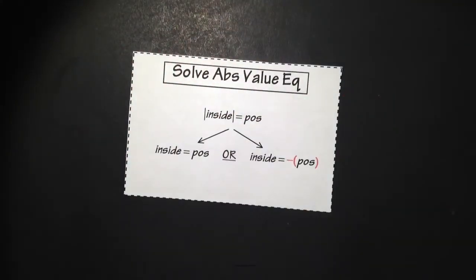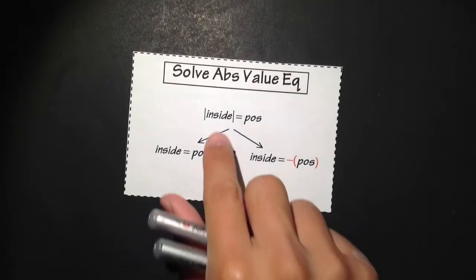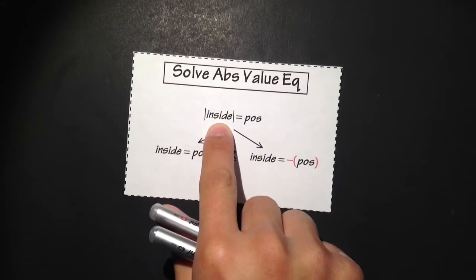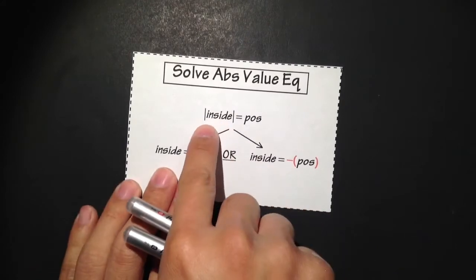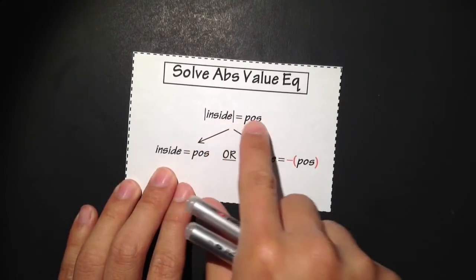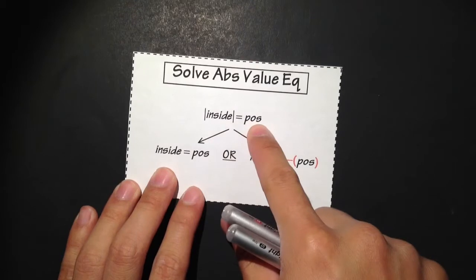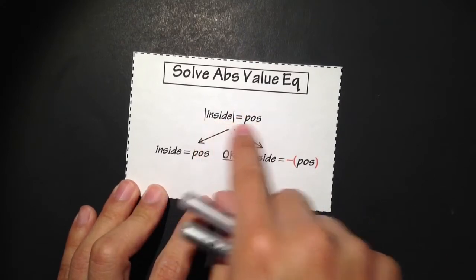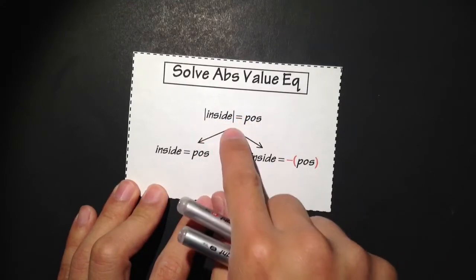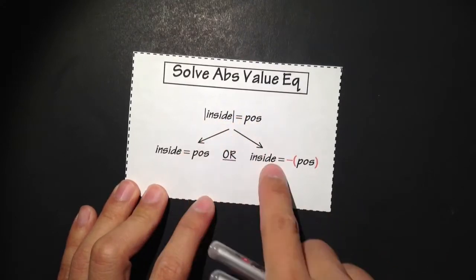Let's talk about how to solve absolute value equations. Whenever you have an equation that has absolute value, the first step is to isolate the absolute value on the left-hand side. If we can get the absolute value of something inside equal to a positive number, then what we want to do is take this and split it into two different equations.